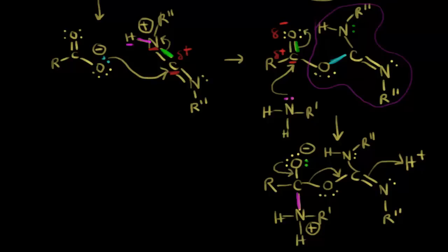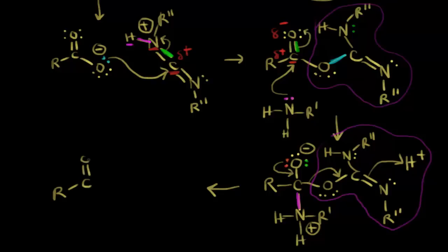This actually forms dicyclohexylurea as a byproduct. If we reform our carbonyl — the electrons in red move in — our R group carbon is now double bonded to oxygen with two lone pairs. This carbon is still bonded to this nitrogen. A base takes this proton, leaving these electrons behind on the nitrogen. Now we have only one hydrogen on this nitrogen with the R' group. So we formed our amide, plus dicyclohexylurea as the other product. DCC allows the amine to function as a nucleophile.